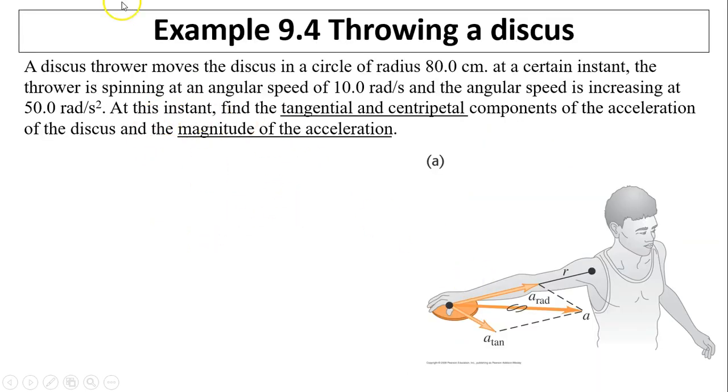Let's take a look at our first example. The discus thrower moves the discus in a circle with a radius of 80 centimeters. From here to the armpit is 0.8 meters. At a certain instant, the thrower is spinning at an angular speed of 10 radians per second, and the angular speed is increasing at 50 radians per second squared. So 10 rad/s is your omega, 50 rad/s² is your alpha. At this instant, find the tangential and centripetal components of acceleration, a_tan and a_rad, and what is A? Try to do it yourself.